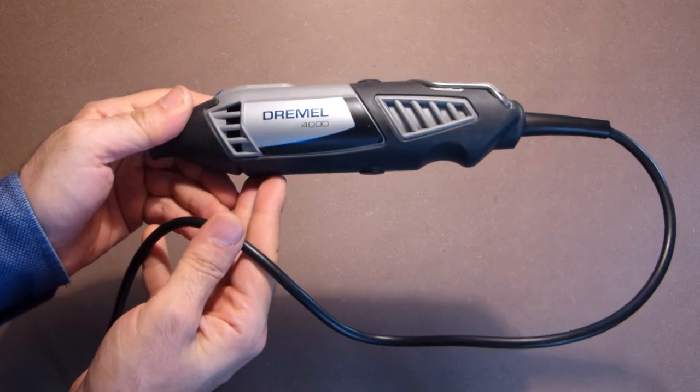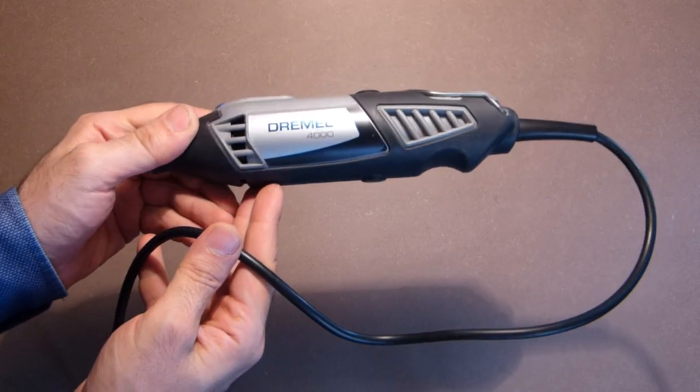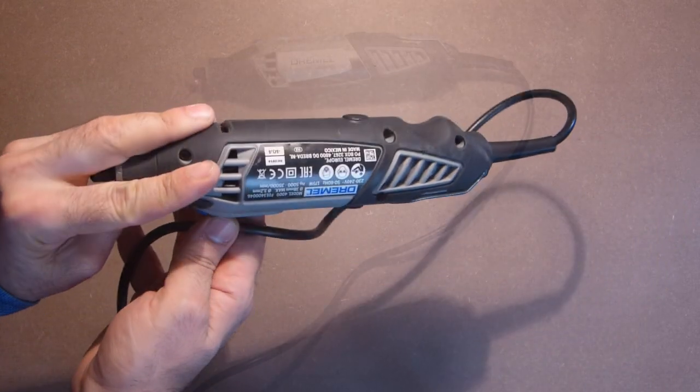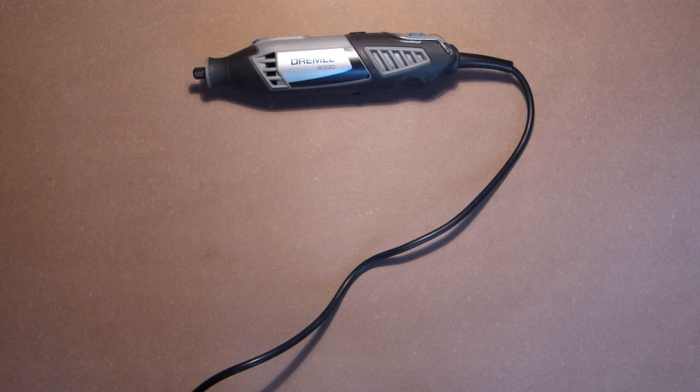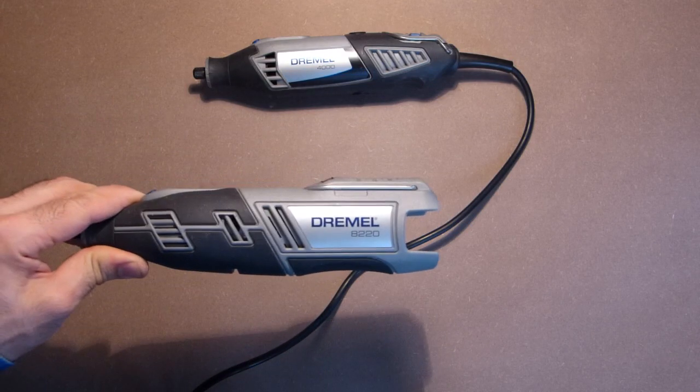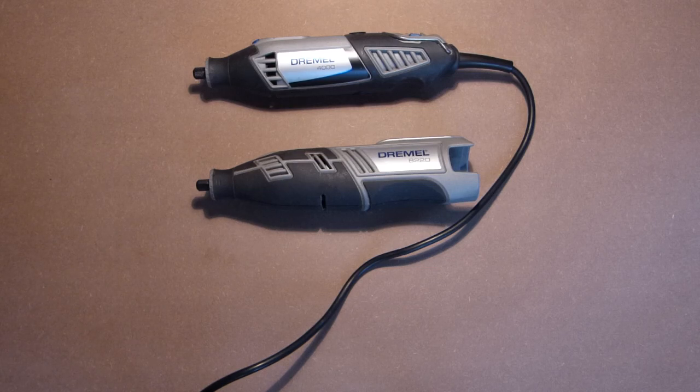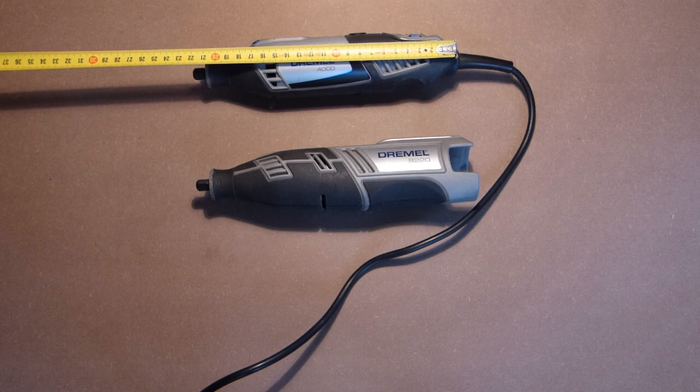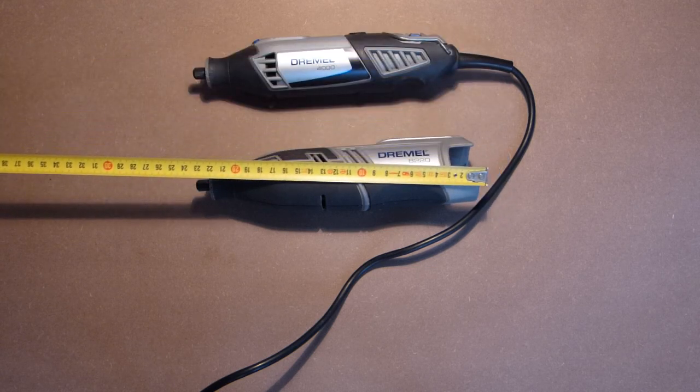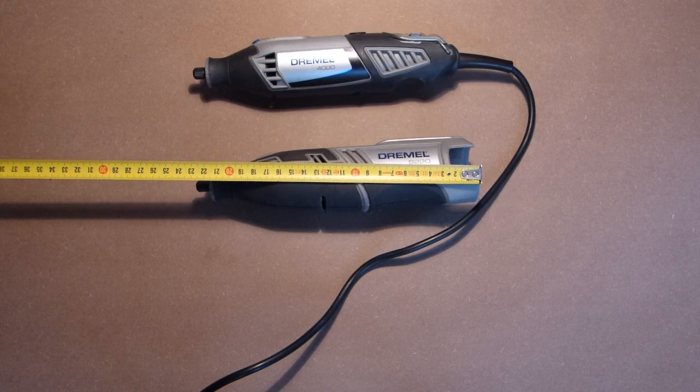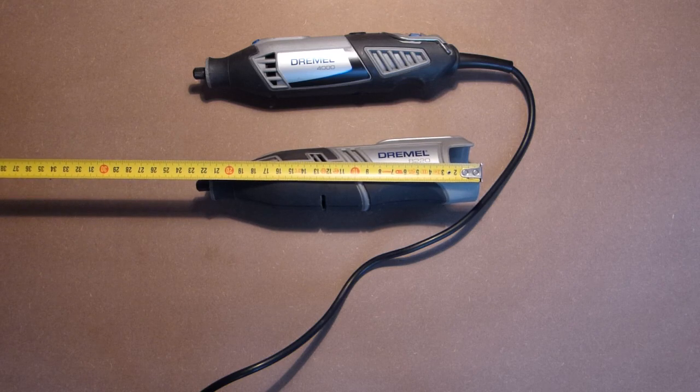So the first device is Dremel 4000 and it's a very popular one. And the second one is 8220-120. The devices are really very similar. The length of the first device is less than 23 cm and of the second device 23 cm.